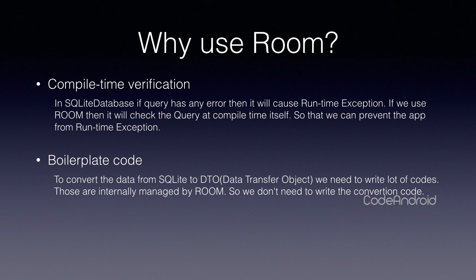Boilerplate Code. When we use native SQLite, we need to write lots of code to convert a Cursor object to a DTO object. In Room Database, we don't need to write any code for this conversion — internally, Room Database itself will handle that.